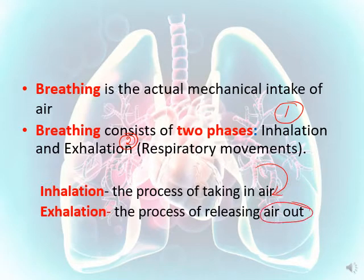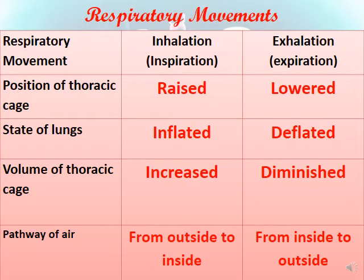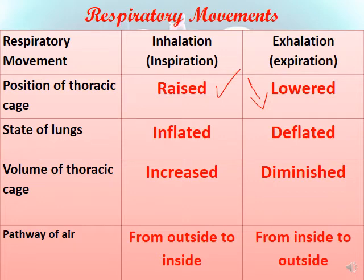During inhalation, the thoracic cage is raised, while during exhalation it is lowered. The state of the lungs: they are inflated and full of air during inhalation, while during exhalation they are deflated. The volume of the thoracic cage will increase during inhalation and decrease during exhalation. The pathway of air during inhalation comes from outside the body to inside, while during exhalation it moves from inside the body to outside.